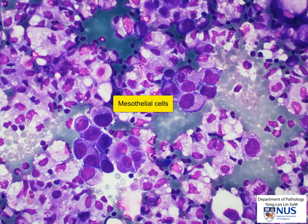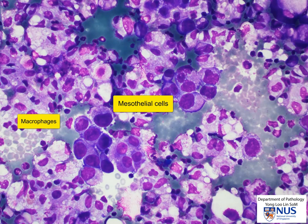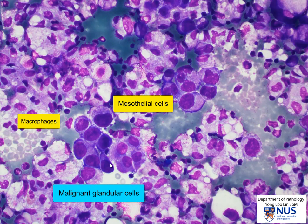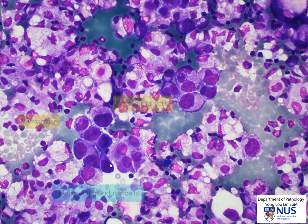There is another group of cells with slightly irregular but oval, elongated nuclei and abundant, very bubbly cytoplasm — these are macrophages. So in this particular field, we can see three different cell types: the malignant cells, the mesothelial cells, and the macrophages.